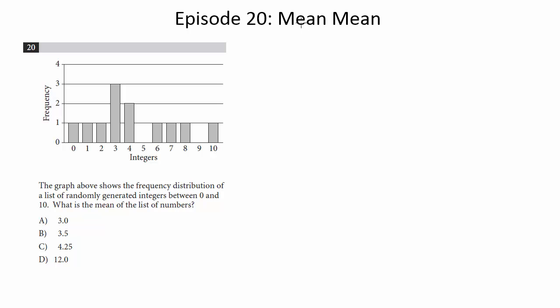Be very careful here. This is why I call this video Mean Mean. It's a very mean question. Don't just look at the values and do 0 plus 1 plus 2 plus 3 plus 4 plus 6 plus 7 plus 8 plus 10, because two of them have a frequency other than 1.